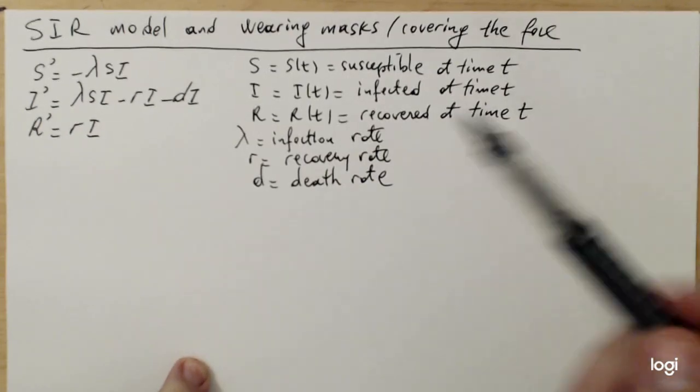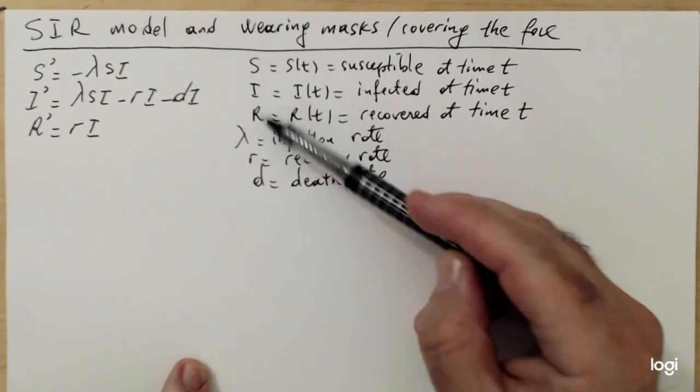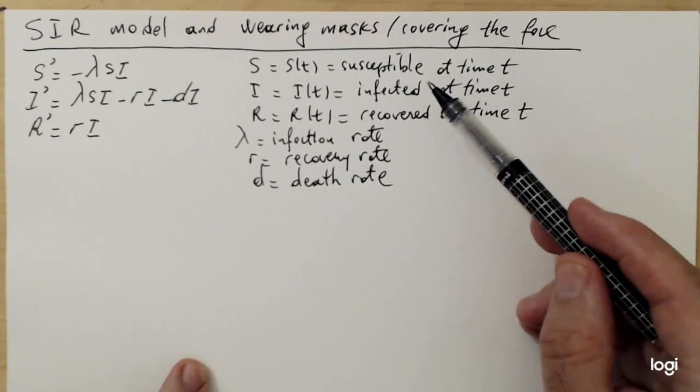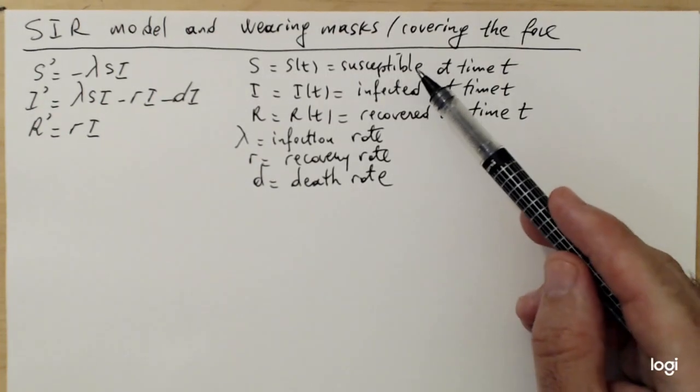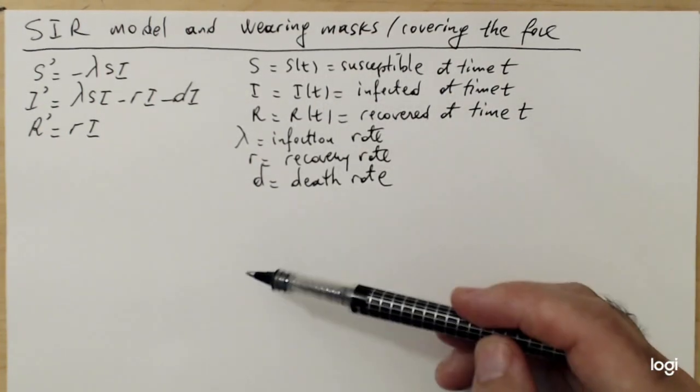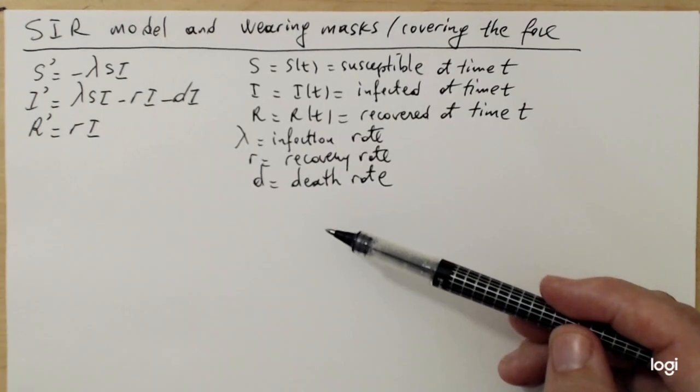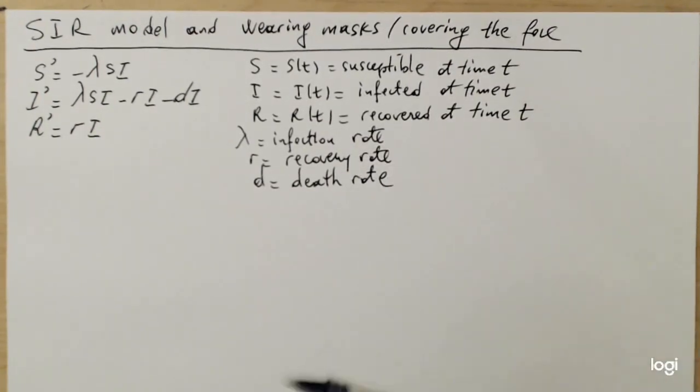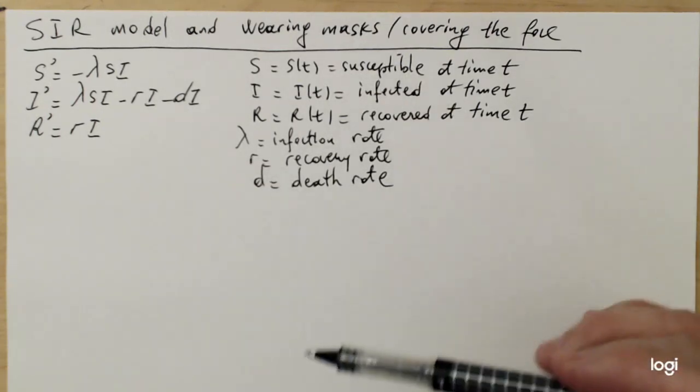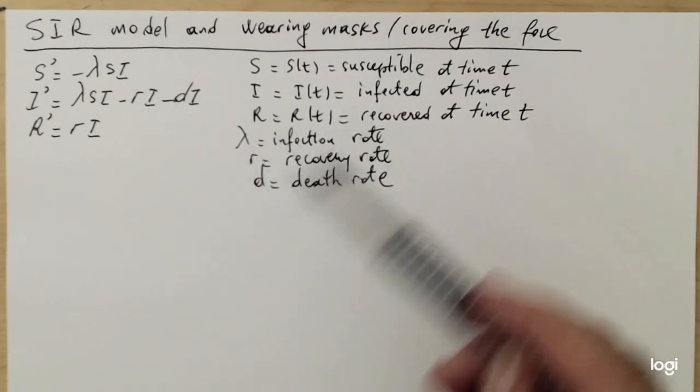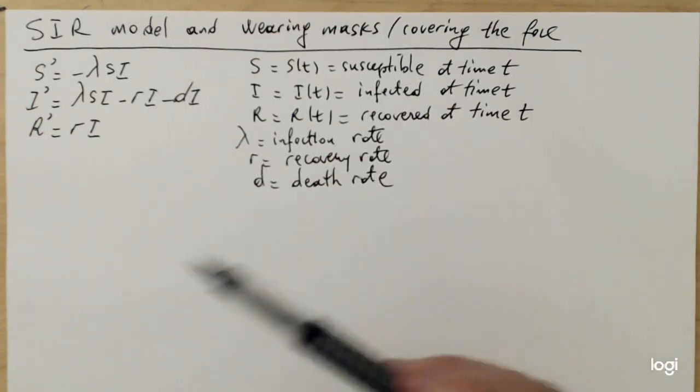So we have three differential equations here, and let me go over the meaning of the variables briefly. All of these are functions of the time t, so these are categories of people. S(t) are the susceptibles at time t, which are healthy people who can still be infected, so not immune to the disease. I(t) are the infected people at time t, and R(t) are recovered at time t. For now, let's assume that there is no reinfection, so that we run this model just for one instance of the epidemic. The parameters are the infection rate λ, which I'll talk about in more details shortly, the recovery rate r and the death rate d.